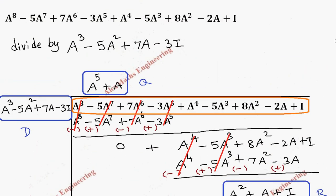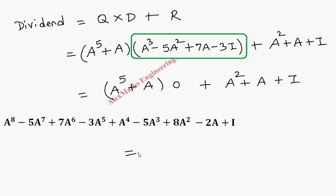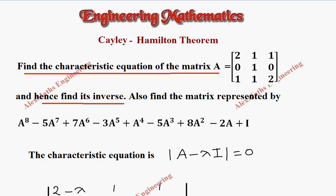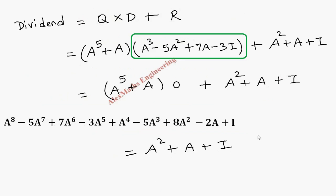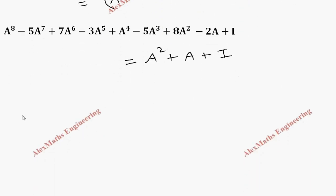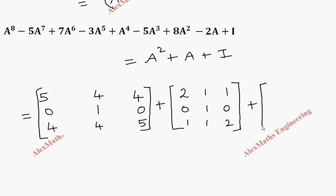Therefore the dividend equals (A⁵ + A) times 0 plus A squared plus A plus I, which leaves us with A squared plus A plus I. We now substitute the values of A squared and A. A squared is: 5, 4, 4; 0, 1, 0; 4, 4, 5. Then A is: 2, 1, 1; 0, 1, 0; 1, 1, 2. And identity I is: 1, 0, 0; 0, 1, 0; 0, 0, 1.